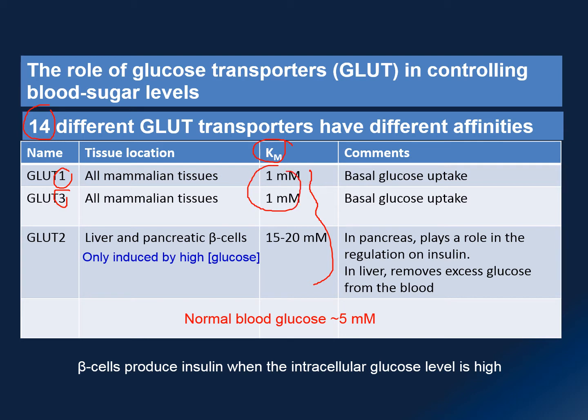So what does a low Km mean? When a Km is very low, it means these glucose transporters have a very high glucose affinity. In other words, at a normal blood sugar level of more than 5 millimolar, both of these glucose transporters are switched on, taking up glucose into your cells for basal metabolism to occur.